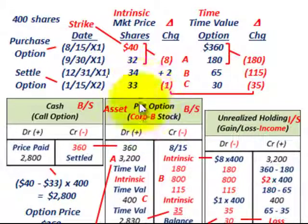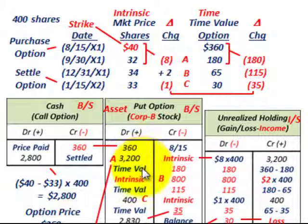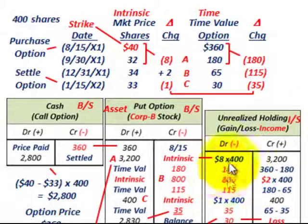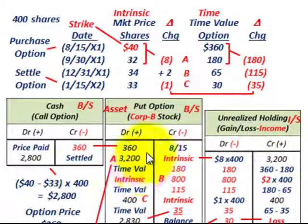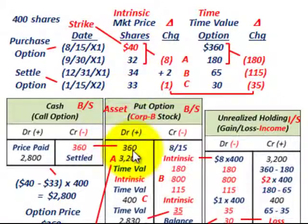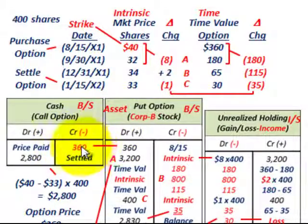Any changes in our intrinsic value and time value are going to be recorded in this put option account — any decreases and increases. And anything related to increases and decreases in our put option goes to an unrealized holding gain or loss account on the income statement. So for purchasing the put option, we paid $360 — debit the put option account for $360, and credit your cash account for $360.